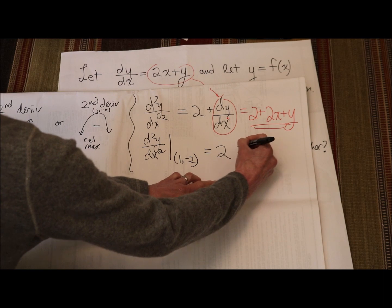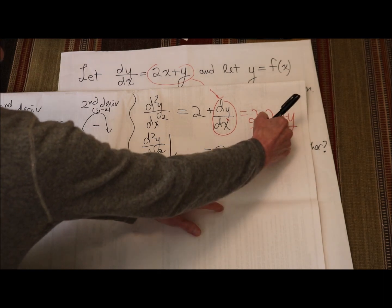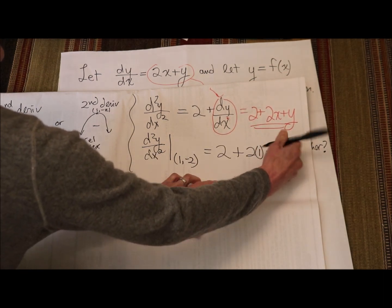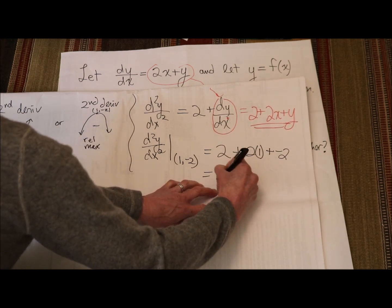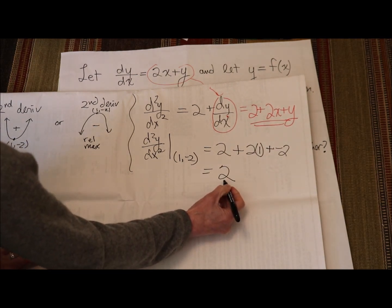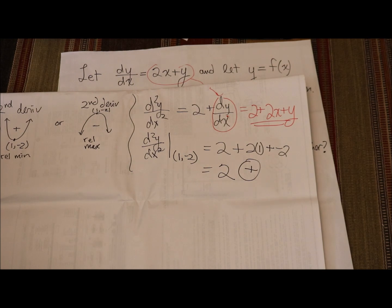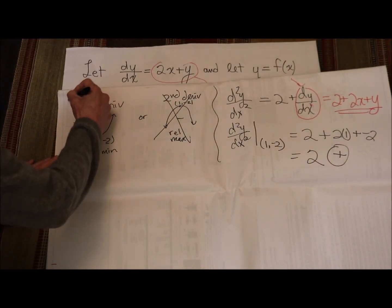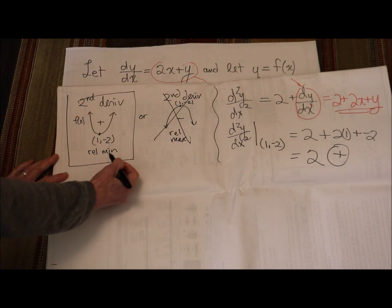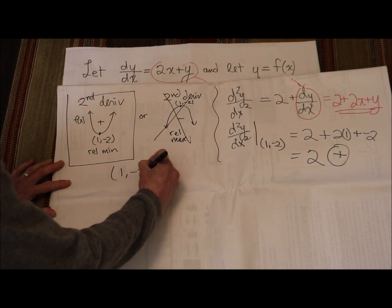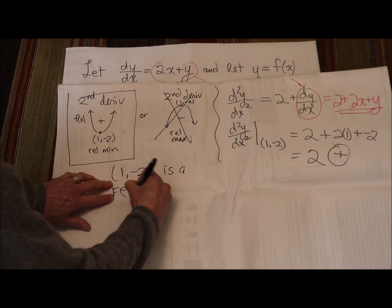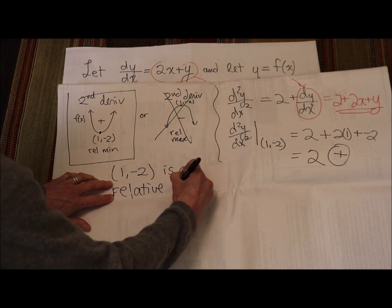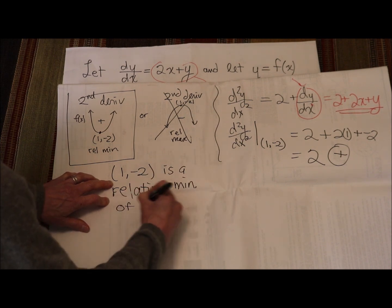So this is going to be 2 plus 2 times x, and my x is 1, plus my y which is negative 2. This gives me 4 minus 2, so that's 2. My second derivative is 2, which is very definitely positive at (1, -2), which means (1, -2) is a relative minimum of f of x.